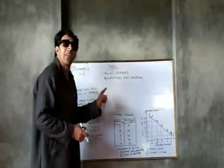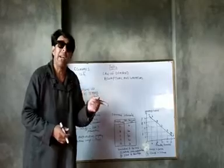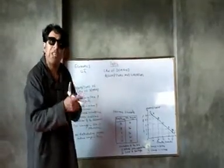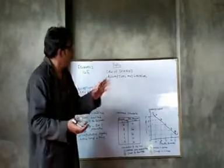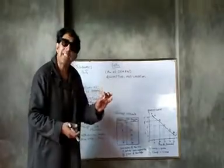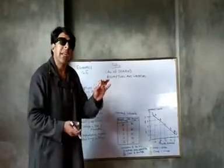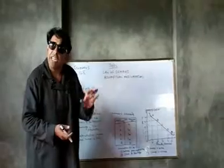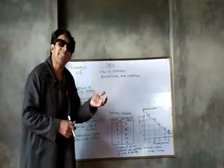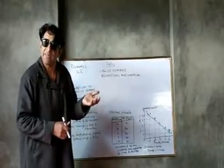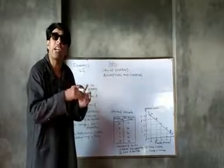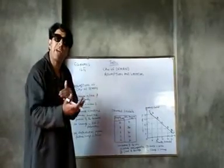The law shows an inverse relationship between price and demand, which means price and the quantity demanded of a particular commodity move in opposite directions. When price of a commodity increases, its quantity demanded decreases, and when price of a commodity falls, its demand increases.